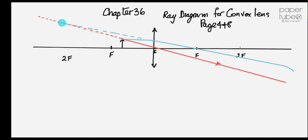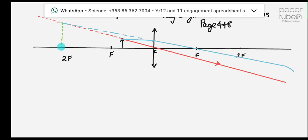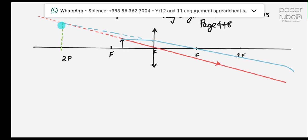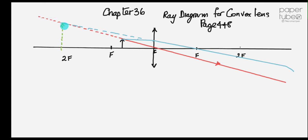I'll make that a dotted line because it's a virtual image. There's your image. So this is a magnifying glass. That is a virtual image — it doesn't exist. There is your object. I'll write O for object and I for image. The image is virtual, erect, enlarged, and beyond f. Where's the object? Between f and c. So that's the first one.